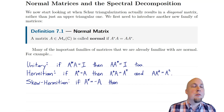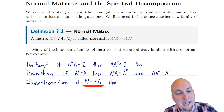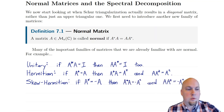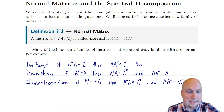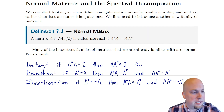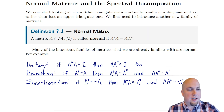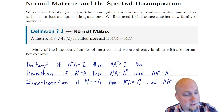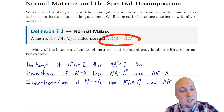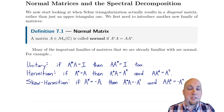Also, every skew-Hermitian matrix is normal. If A* equals minus A, then we do a similar calculation. A*A is just minus A squared — it's minus A times A. But the same thing happens if you multiply in the other order; the minus sign can just be pulled out in front, so A times A* is A times minus A, which is minus A squared again. So they're the same thing, and skew-Hermitian matrices are also normal.